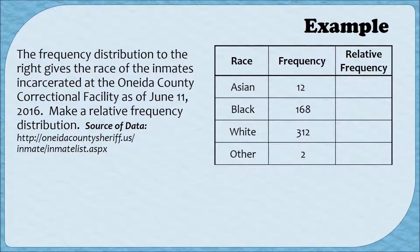In this example, the frequency distribution gives us the race of the inmates incarcerated at the Omida County Correctional Facility in June of 2016, and we've been directed to turn this frequency distribution into a relative frequency distribution. You can make a relative frequency distribution if you're given raw data by first making a frequency distribution — you can watch videos one or two from this module for review — and then turn that into a relative frequency distribution.